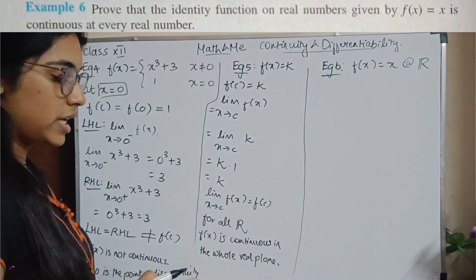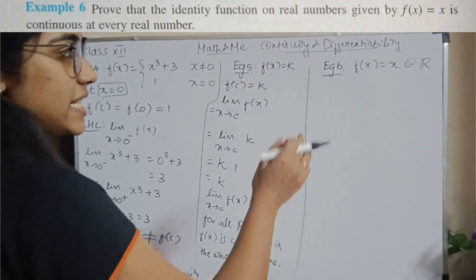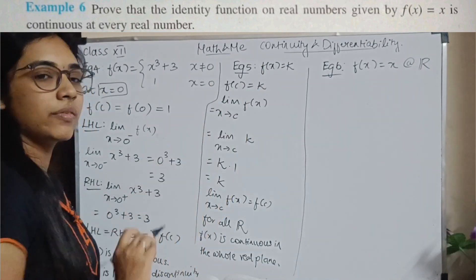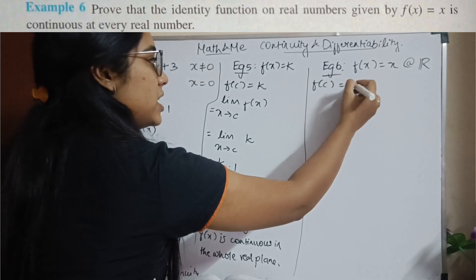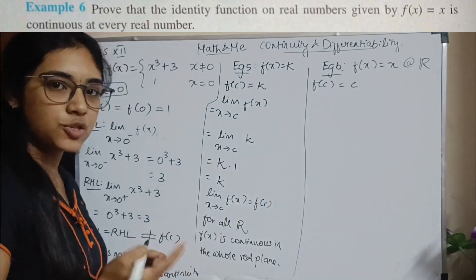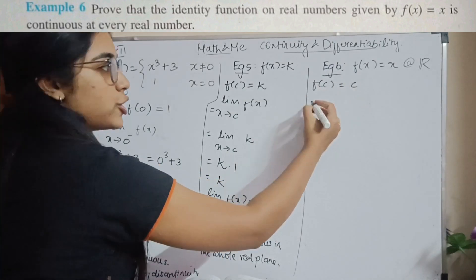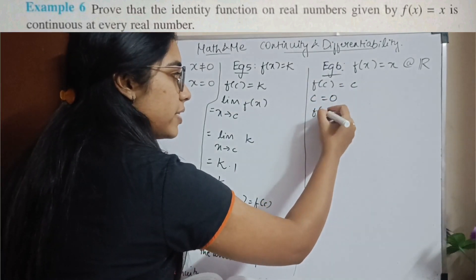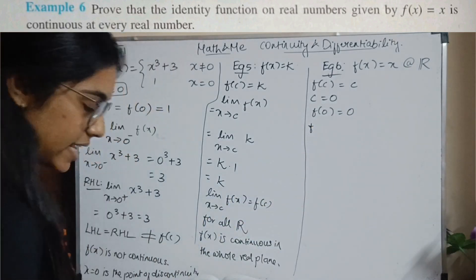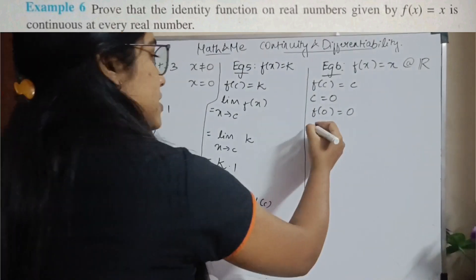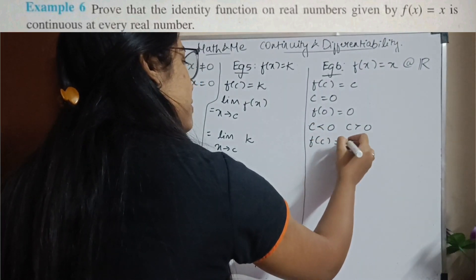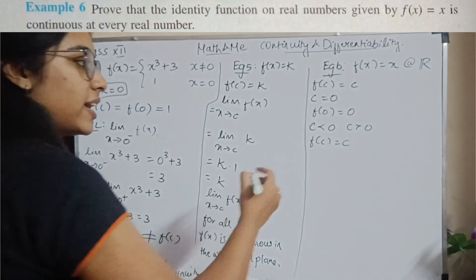Example 6: f(x) = x. Prove it is continuous for all real numbers. f(c) = c for any value of c. For c = 0, f(0) = 0. For c < 0 or c > 0, f(c) = c. So it satisfies for any value.